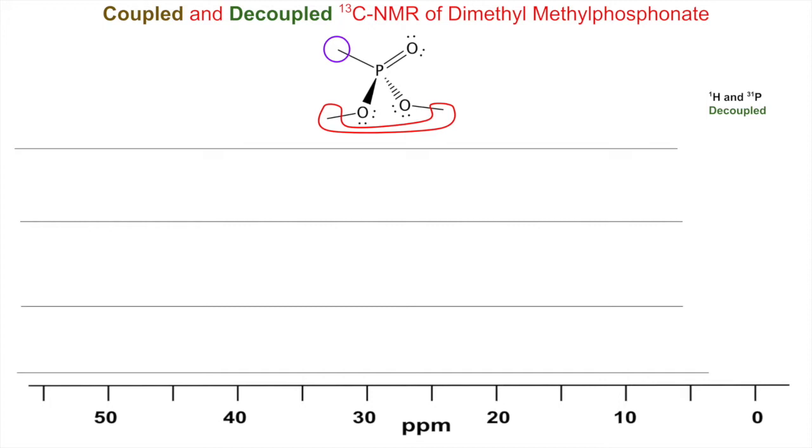First, let's look at the proton and P-31 decoupled spectrum. The carbons cannot be coupled by the hydrogen H-1 isotope or the phosphorus P-31 isotope. We get one signal at about 56 parts per million and another at about 10 parts per million.